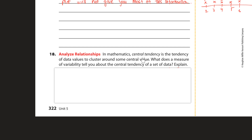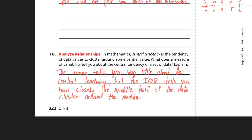Number 18: in mathematics, central tendency is the tendency of data values to cluster around some central value. What does a measure of variability tell you about the central tendency of a data set? The range tells you very little about the central tendency, but the IQR tells you how closely the middle half of the data clusters around the median.